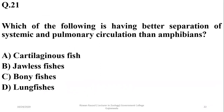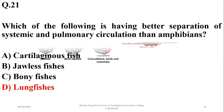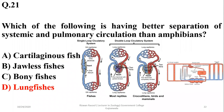Number 21: which of the following has better separation of systemic and pulmonary circulation than amphibians? Lungfishes actually have a better circulatory plan compared to amphibians. Mammals and reptiles are also evolved forms with better circulation. Other fishes have poor circulatory plans as they have single-circuit circulation. So we prefer lungfishes.